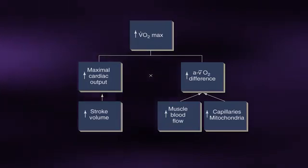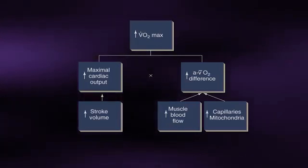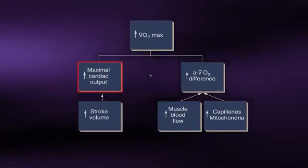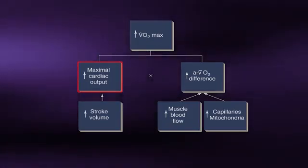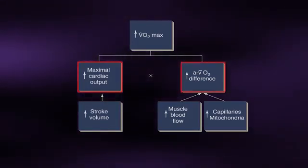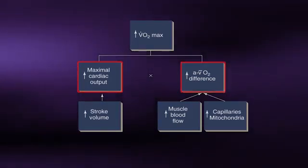Endurance training will also lead to an increase in maximal oxygen consumption. All components of the Fick equation — both maximal cardiac output and maximal arterial-venous oxygen difference — respond and adapt via the overload principle to the training stimulus.